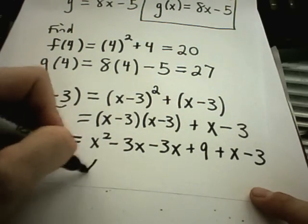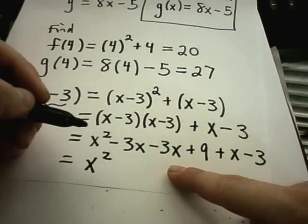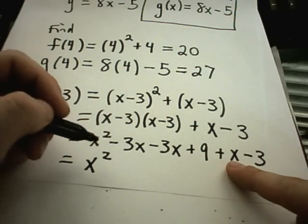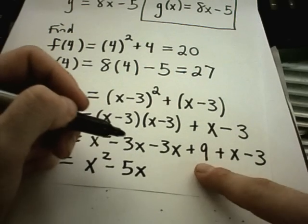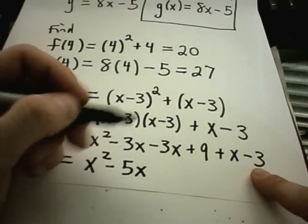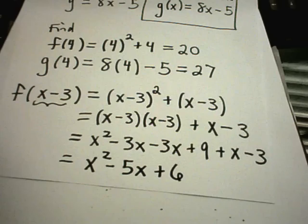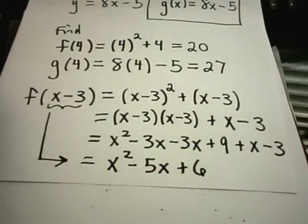And if I combine my like terms I'll get x squared. I've got a minus 3x minus 3x, that's minus 6x, plus another x, so minus 6 plus 1 is minus 5x. Then I have positive 9 minus 3, that'll leave me with positive 6. And this is now equivalent to the expression f of x minus 3.